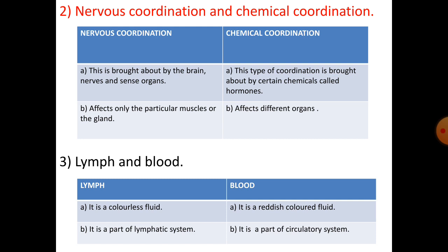Number two: nervous coordination and chemical coordination. Under nervous coordination: it is brought about by the brain, nerves, and sense organs, and affects only particular muscles or glands. Under chemical coordination: this type of coordination is brought about by certain chemicals called hormones, and affects different organs.